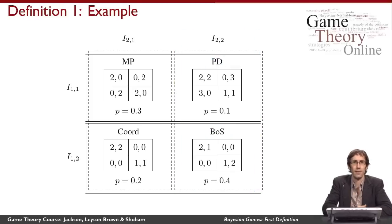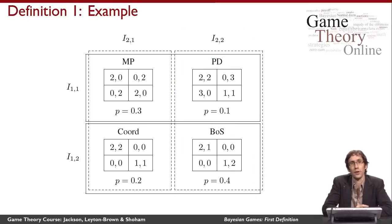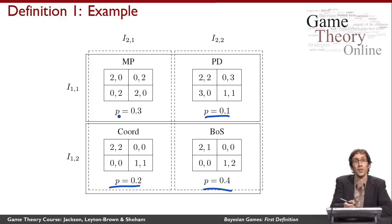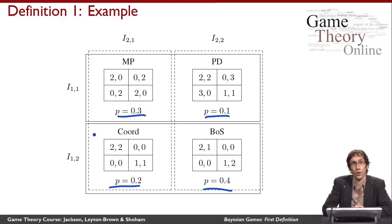I'll leave for a future video how we actually reason about these games. What we've learned here is how to define a Bayesian game by writing it as a common probability distribution over multiple different normal form games, all of which share the same number of players and the same action sets.